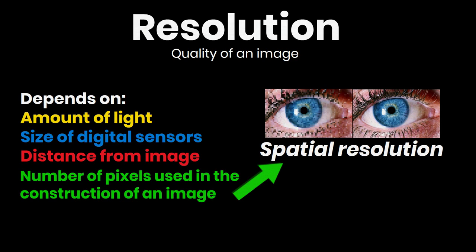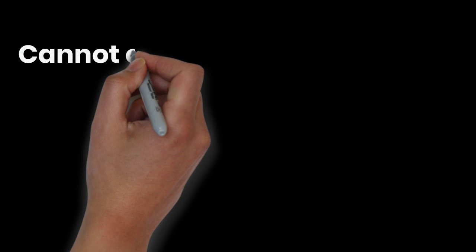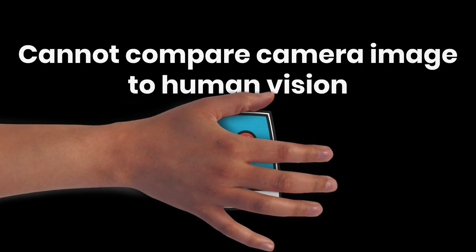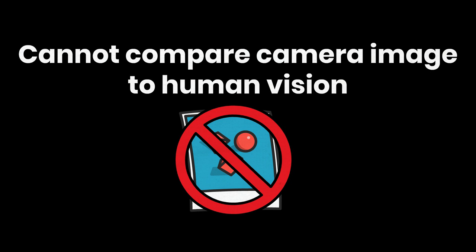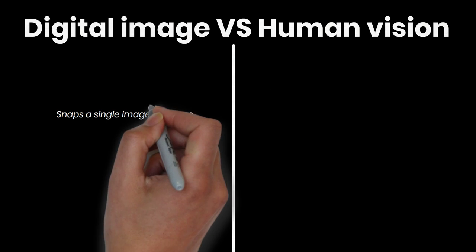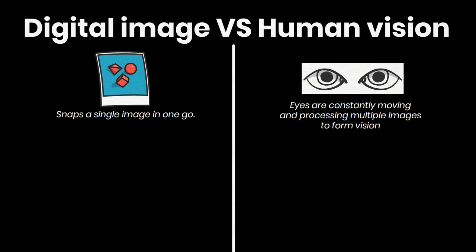If something on a screen goes out of focus, the number of pixels in the video frame stays the same, but the image loses detail to the eye. A camera image can't be compared to human vision because there are several problems with comparing human vision to a digital image. For example, a digital camera snaps a single image in one go, whereas our eyes are constantly moving about, and the brain must make sense of a stream of information to form what we call vision.